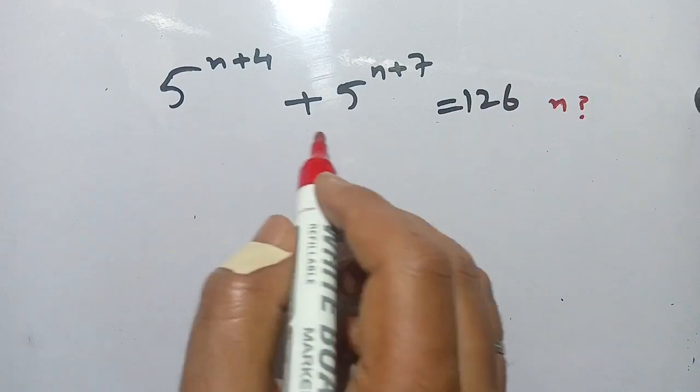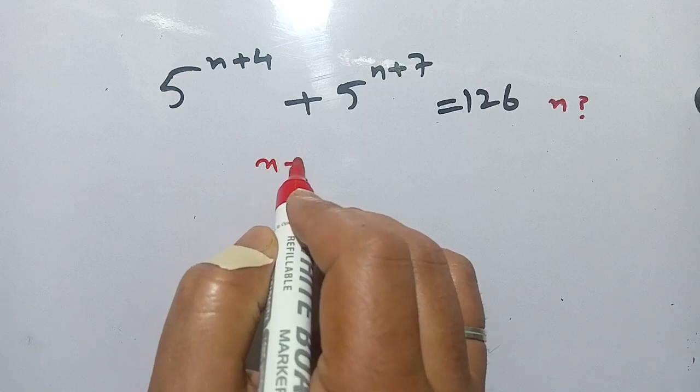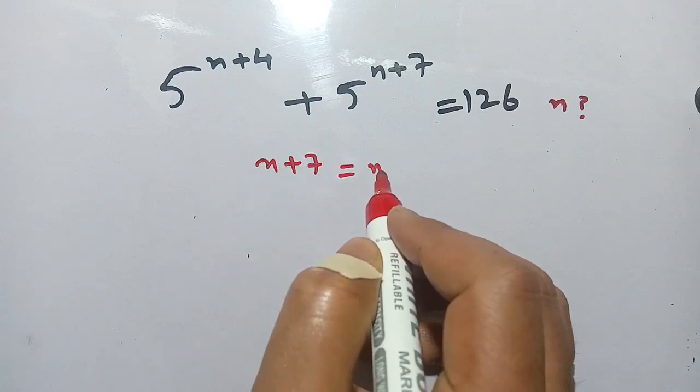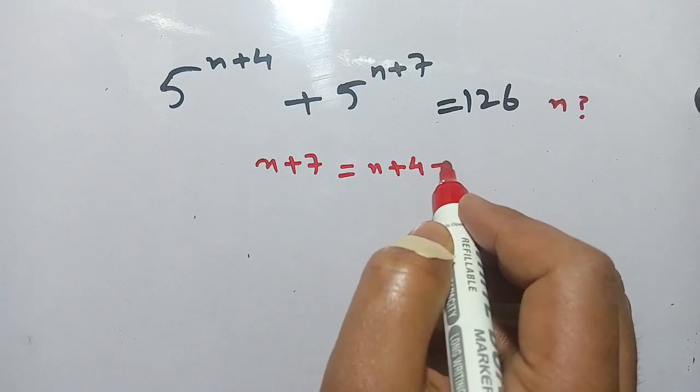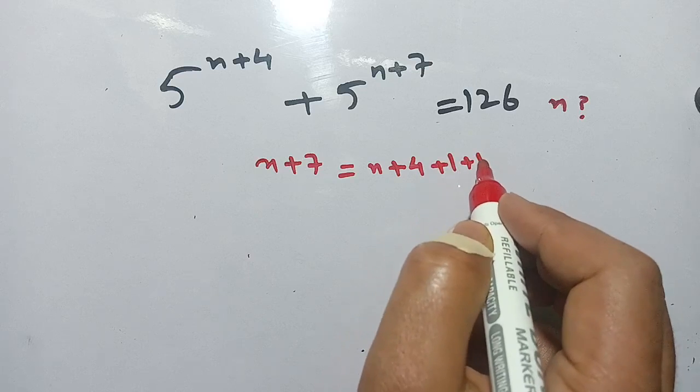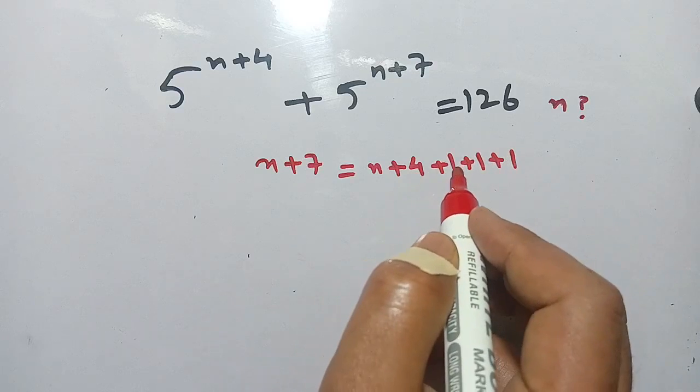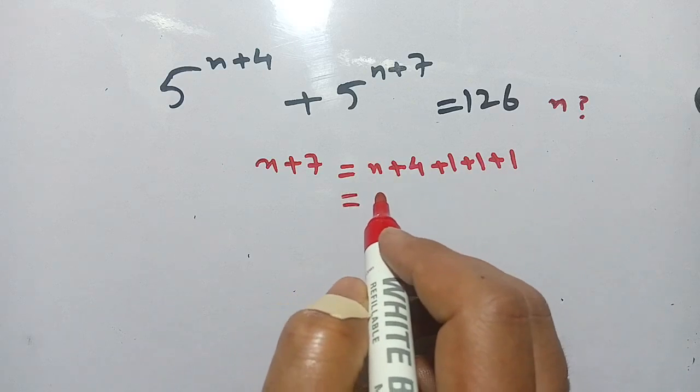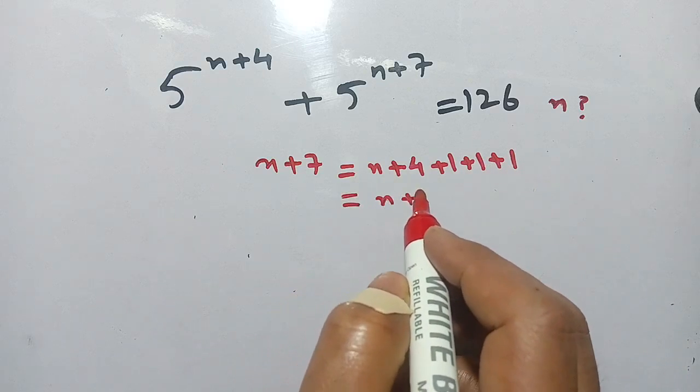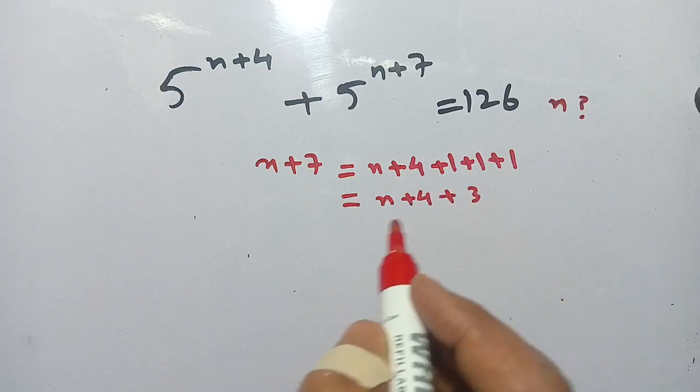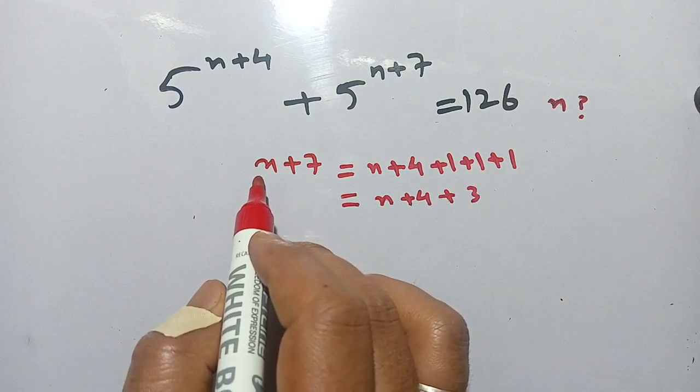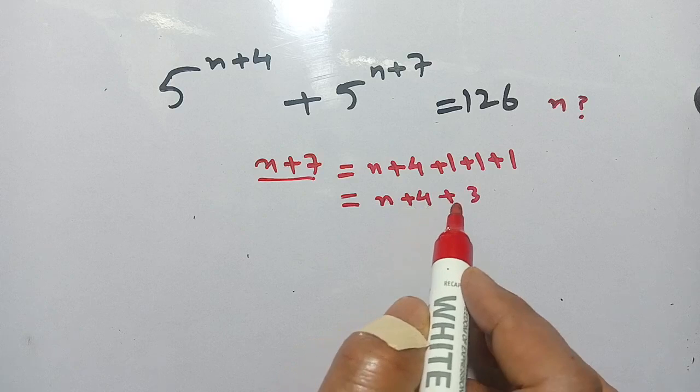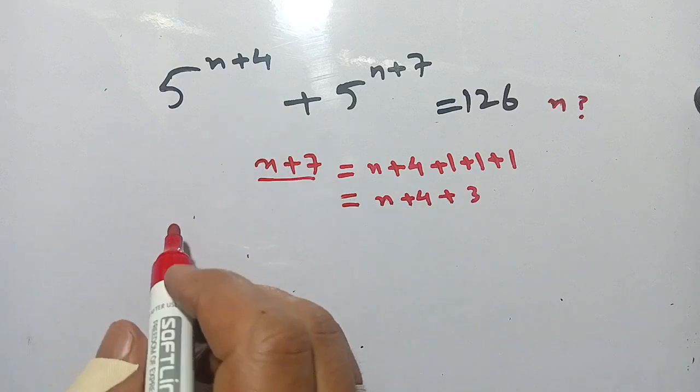Now we see that n+7 can be written as n+4 plus 1 plus 1 plus 1, which is equal to n+4 plus 3. Now replace n+7 with n+4 plus 3 and now we get...